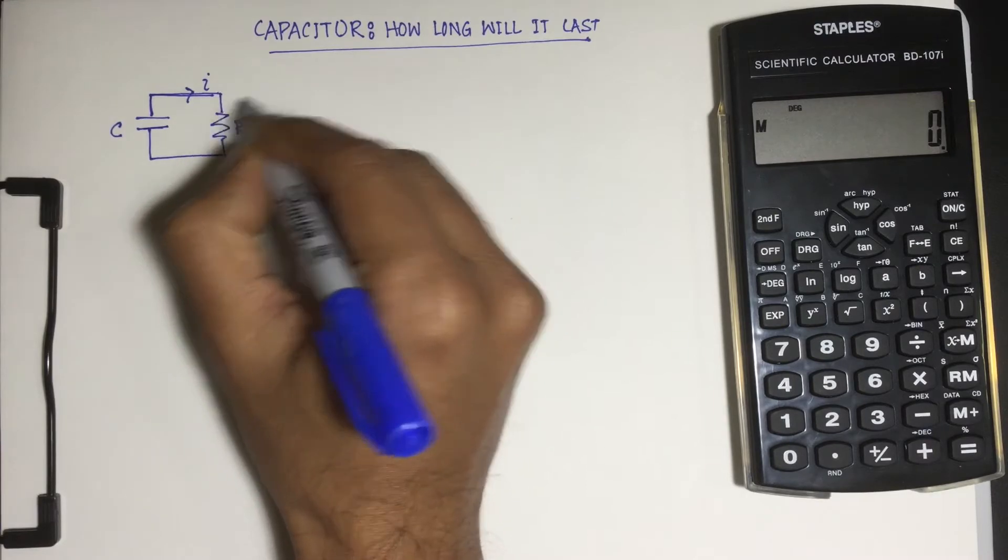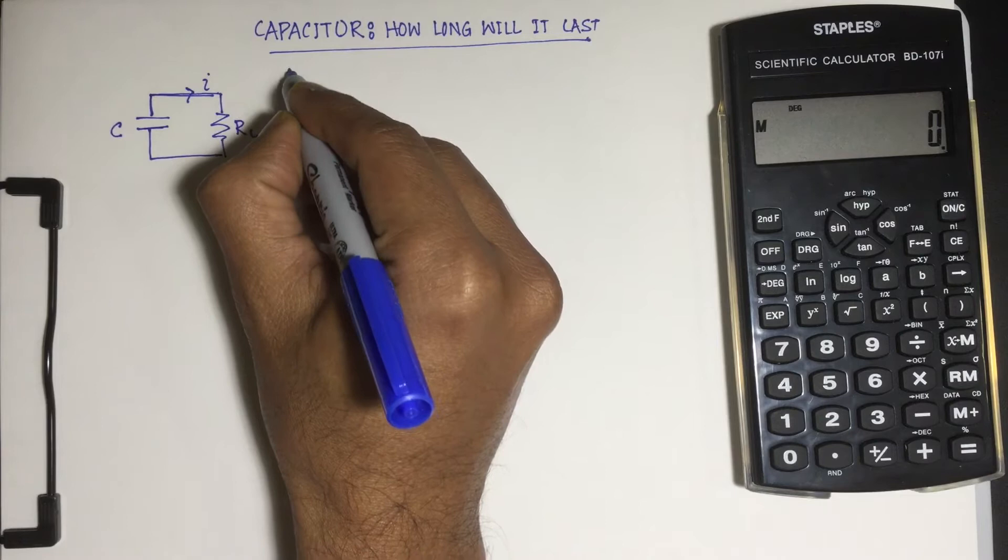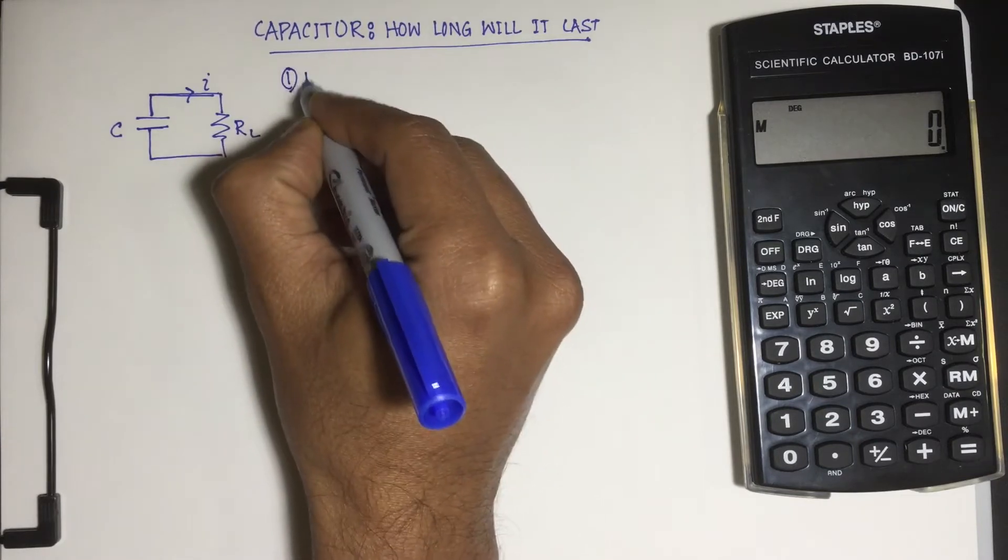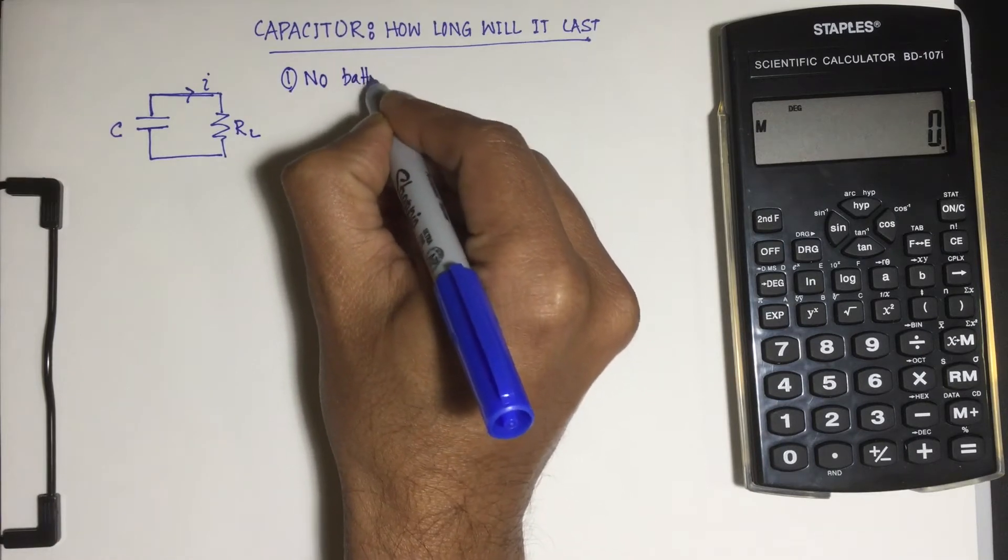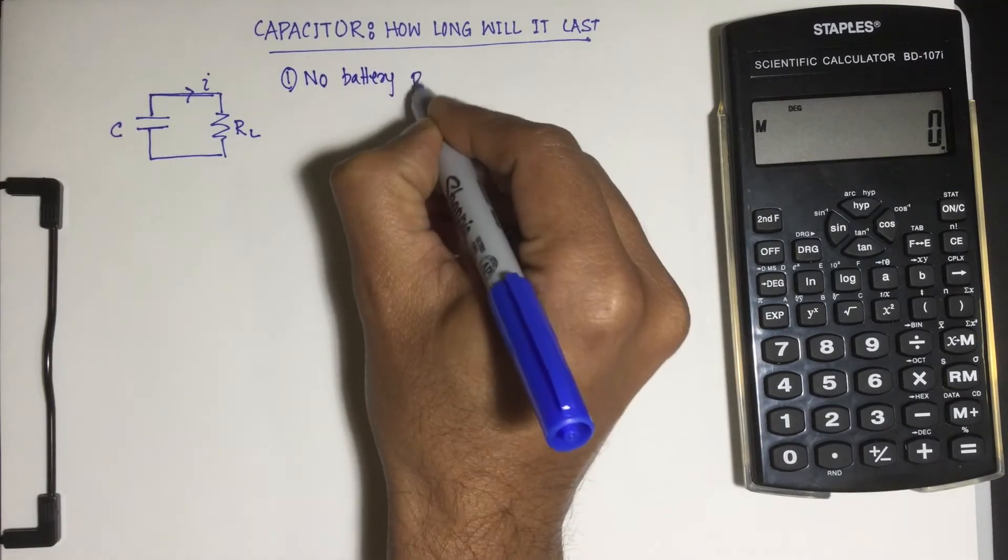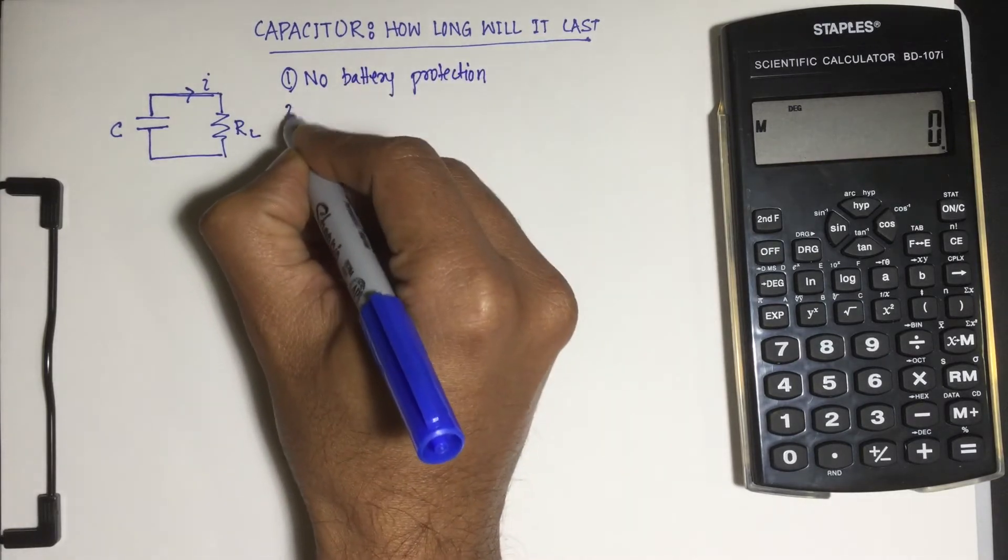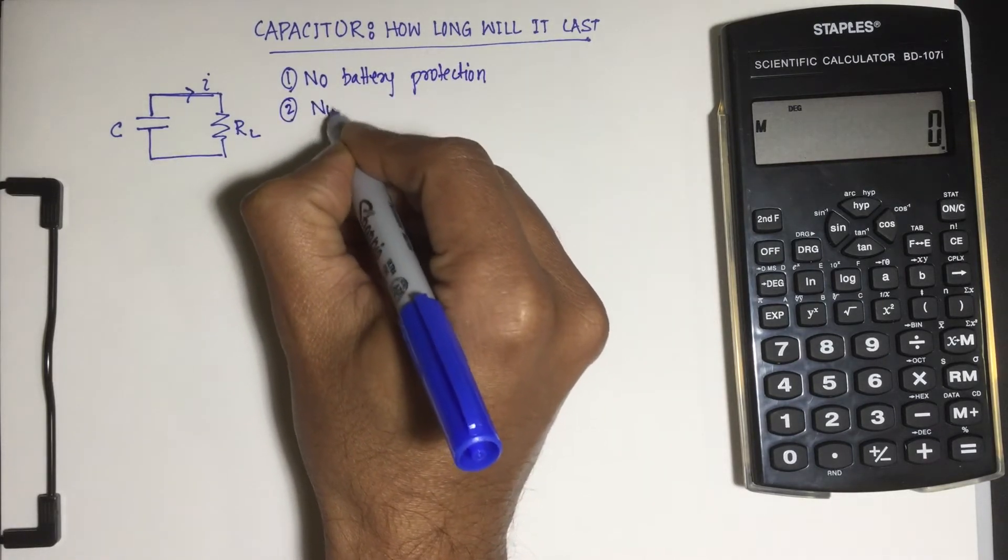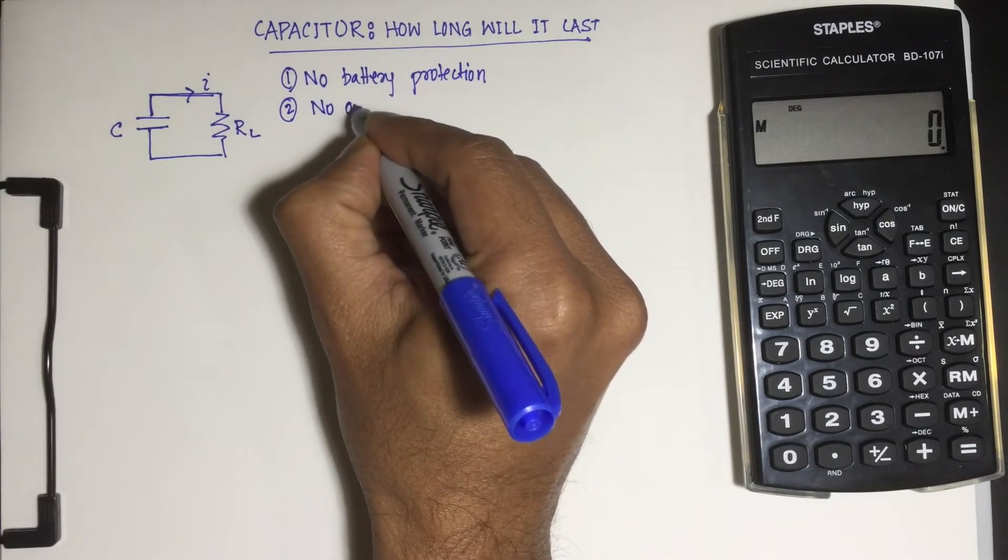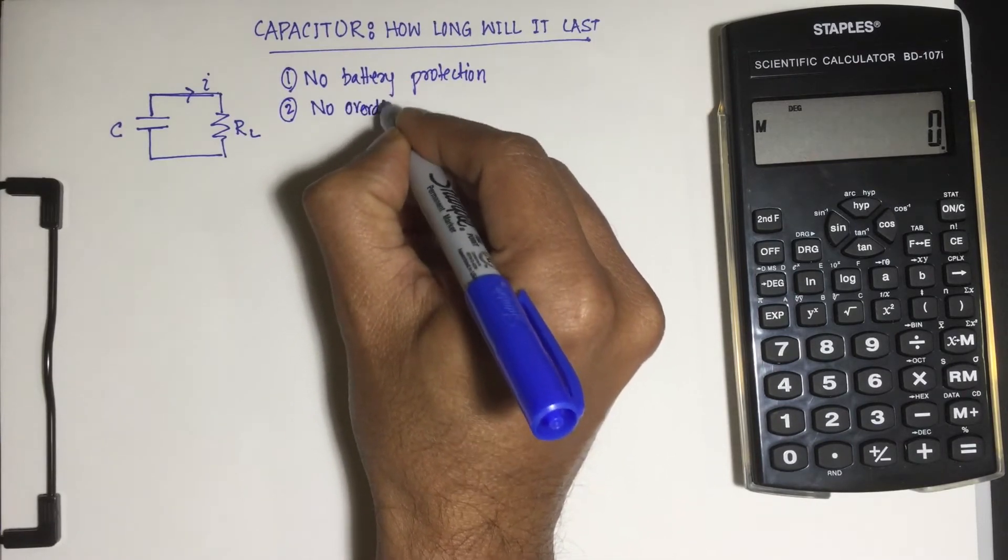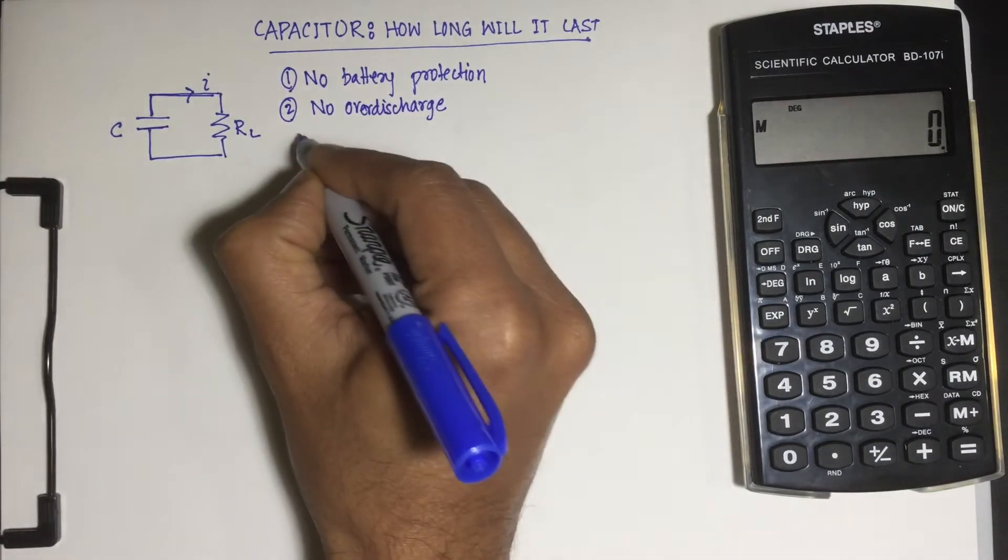If we have a capacitor, then one: we don't need or there is no need for a battery protection circuit, that's the first advantage. Second, we don't have to worry about or no discharge protection or over-discharge protection is required. You cannot over-discharge a capacitor.